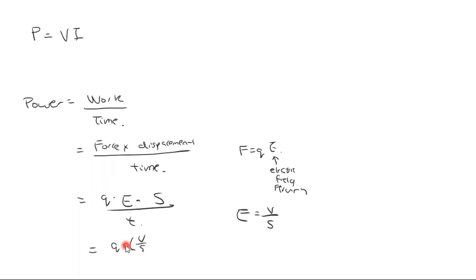it this way, but they're all equivalent. You can see this will simplify down to q times V over t, and I'll do it as q over t times V. But q over t by definition is I. Remember, I is current, which is flow of charge.